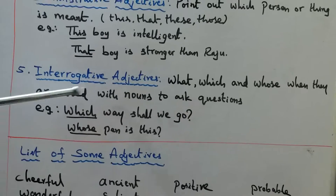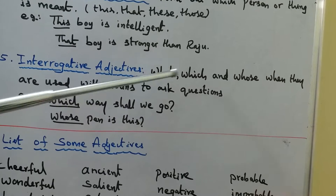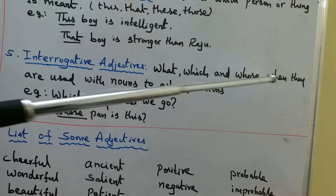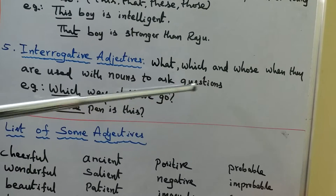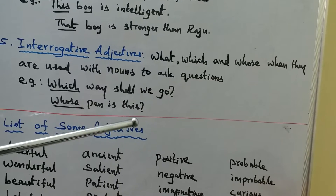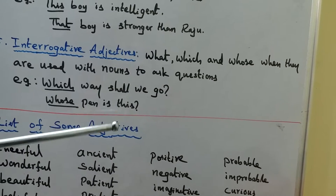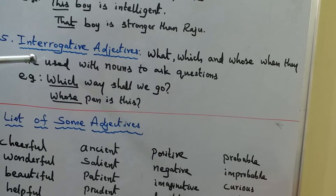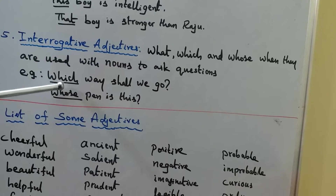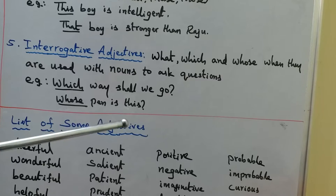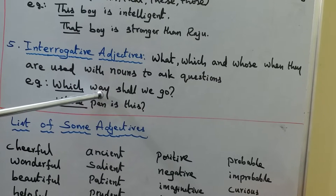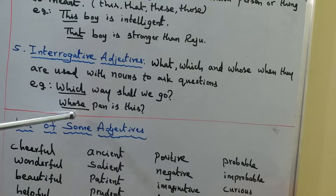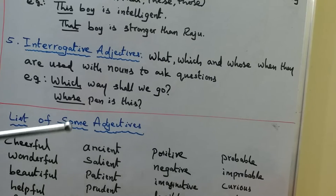The last type is interrogative adjectives. There are three key words: what, which, and whose. When they are used with nouns to ask questions, they fall under the category of interrogative adjectives. For example: 'Which way shall we go?' — here 'way' is a noun. 'Whose pen is this?' — here 'pen' is a noun. So 'which' and 'whose' are interrogative adjectives.